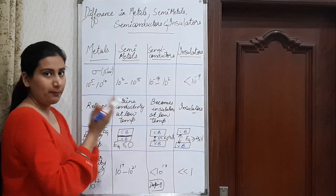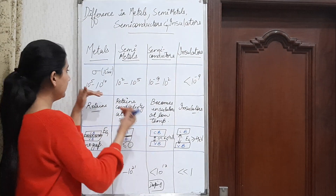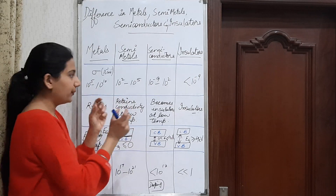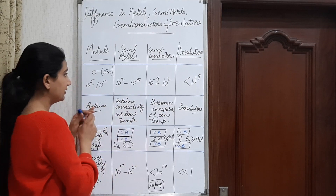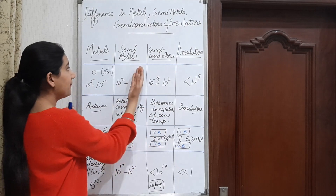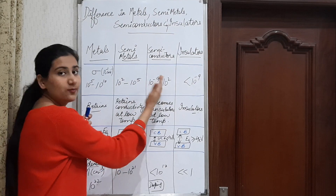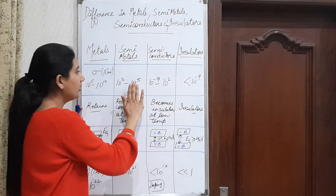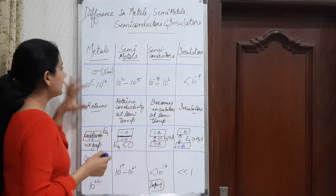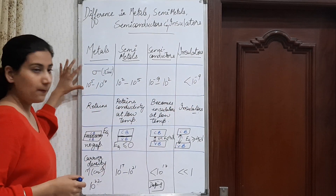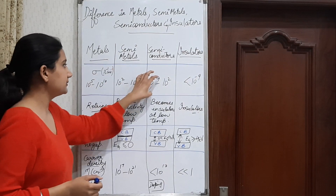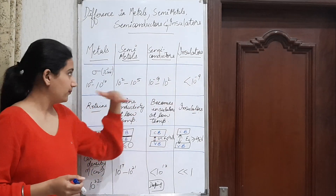If we talk about conductivity, the conductivity number variation is there. The conductivity of semi-metals is more than that of semiconductors. This is a chart of conductivity for metals, semi-metals, semiconductors, and insulators.